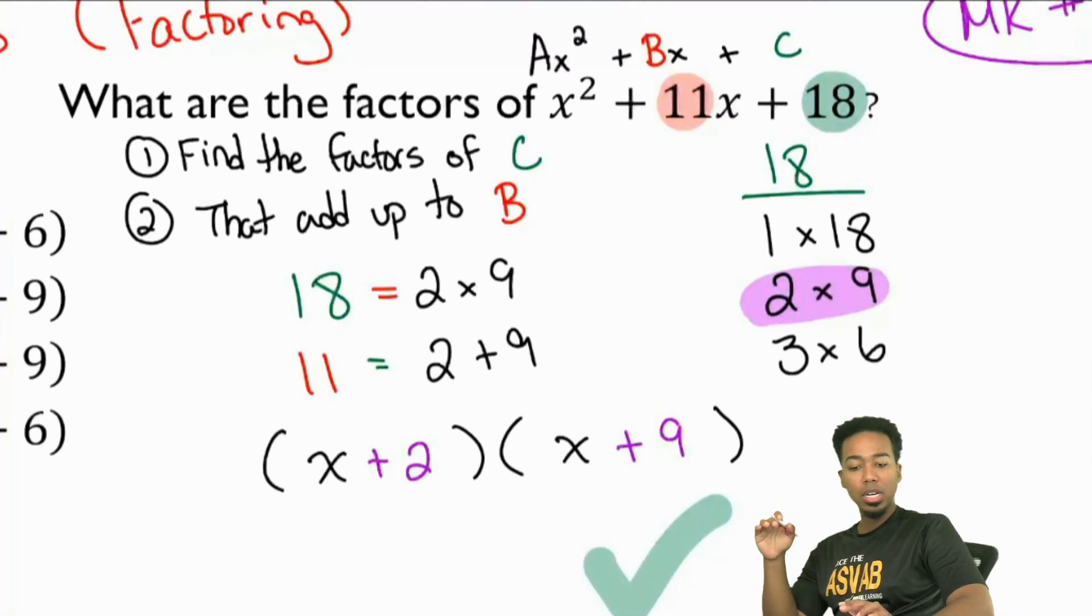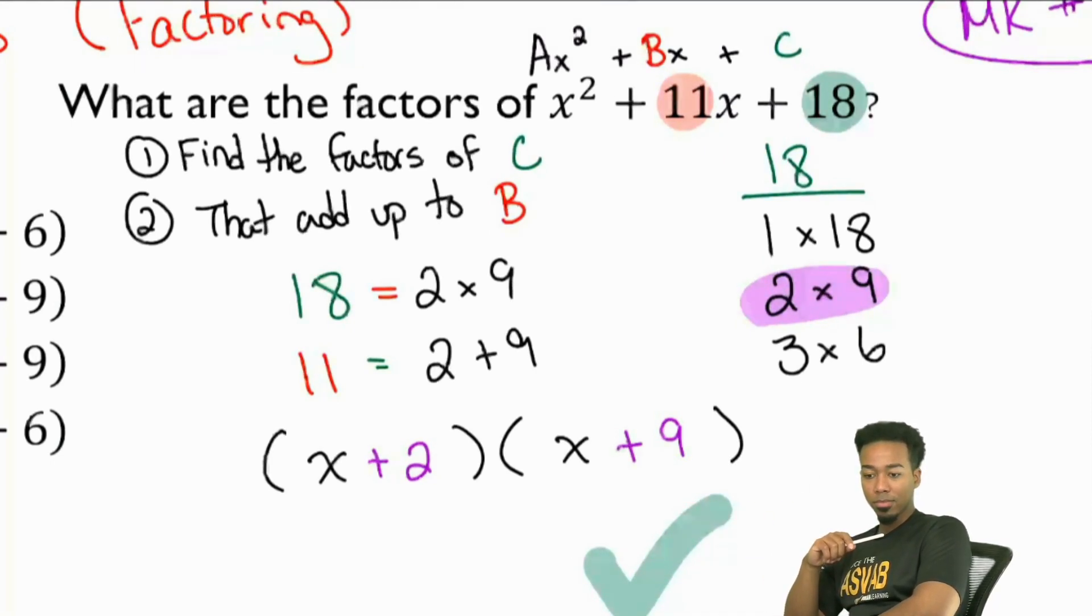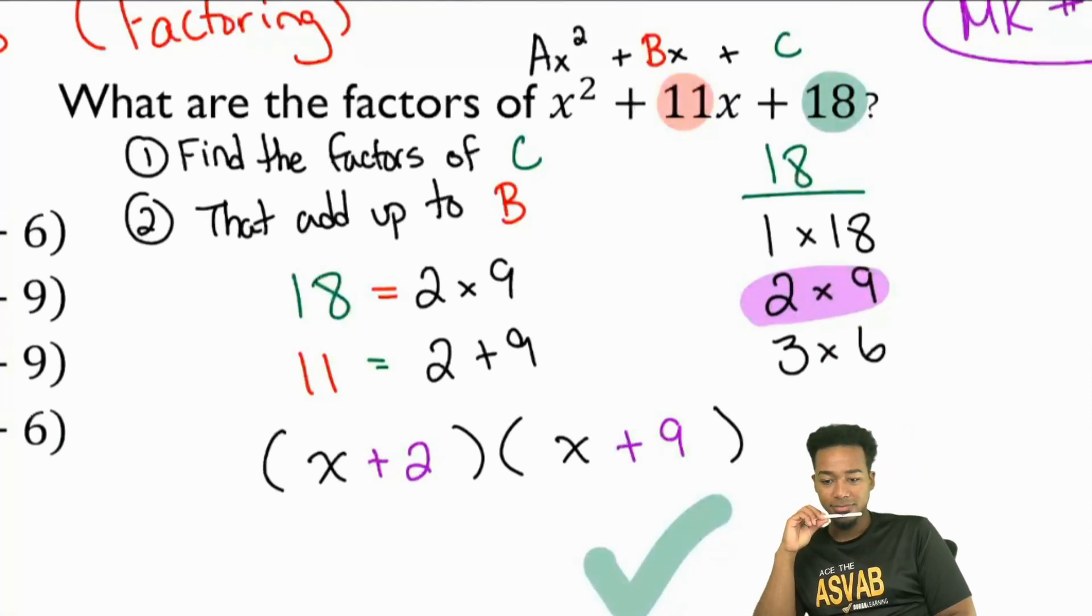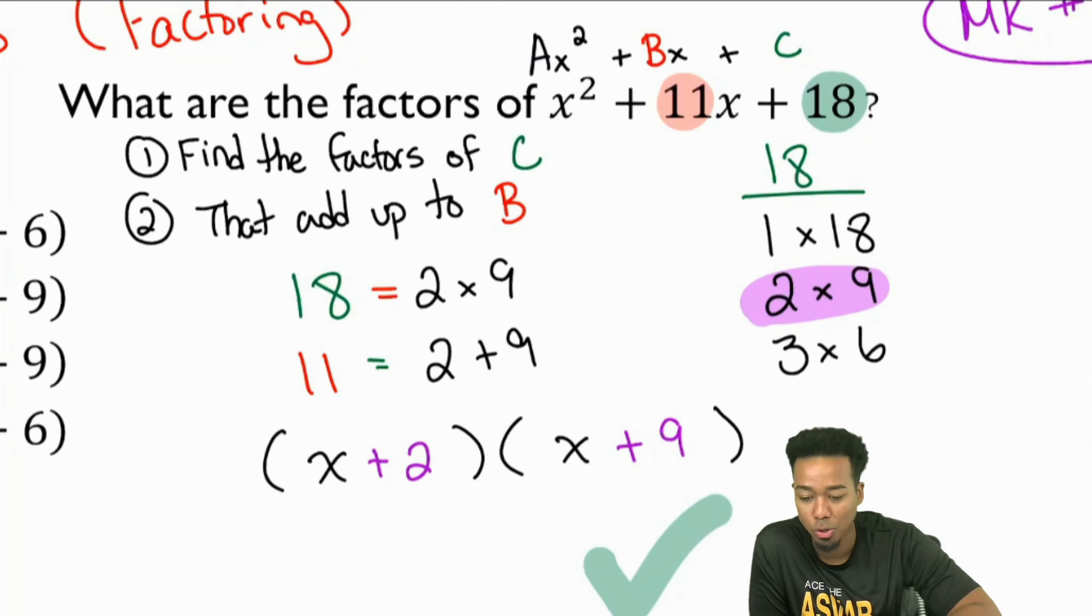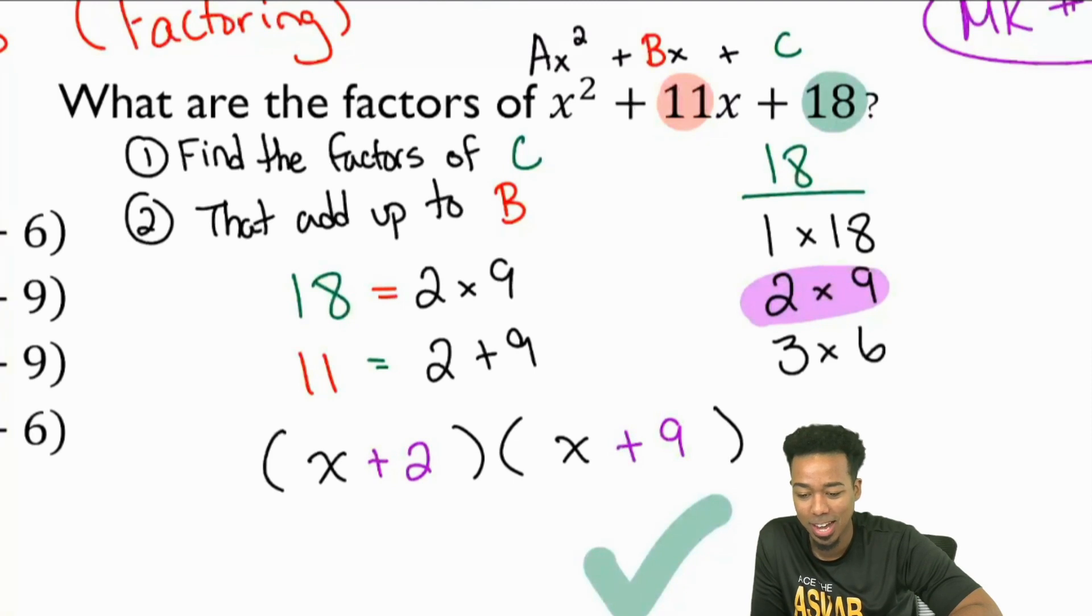Does that make any sort of sense to anybody who's struggled with this before? Find the factors of C, find the factors of 18 that add up to B, that add up to that 11 in the middle. That's all you need. I'm glad you guys feel that way. So let me just read this for the recording. Yeah, it makes sense. I struggle with these all the time. I used to see a complicated word. Amazing, 100, makes sense.